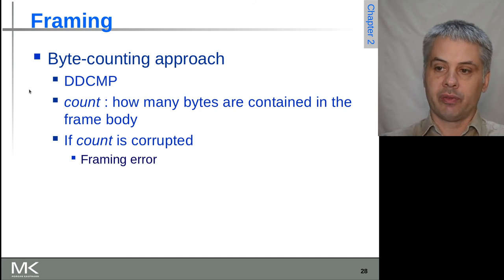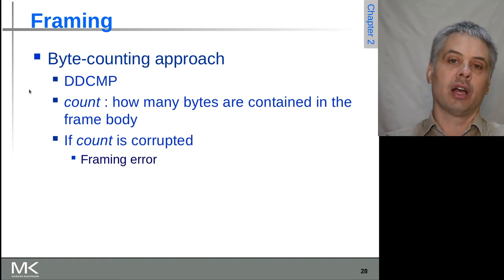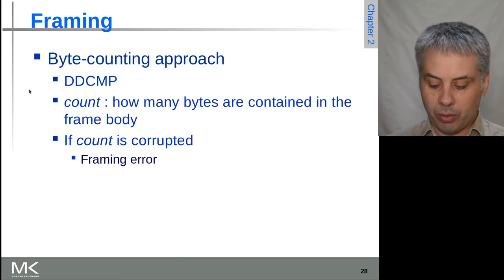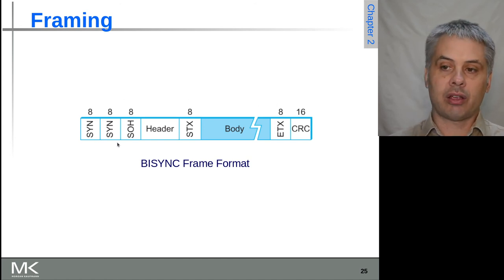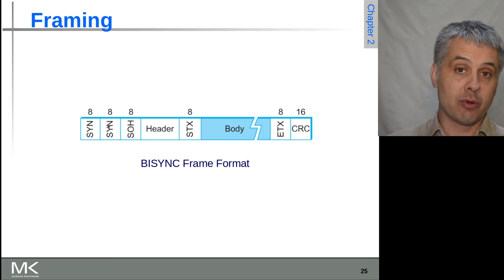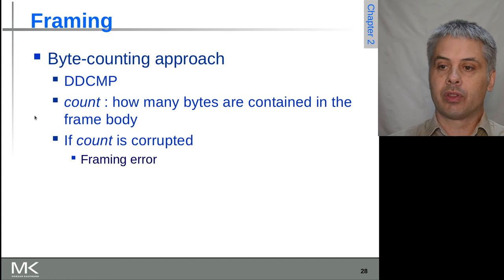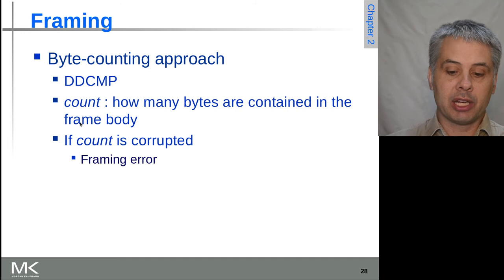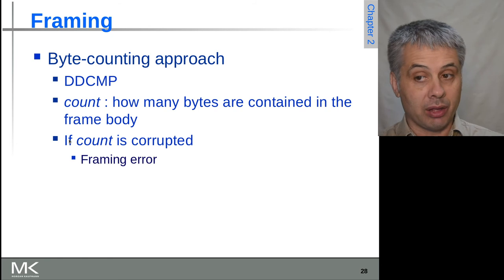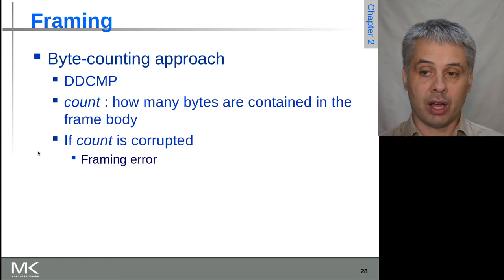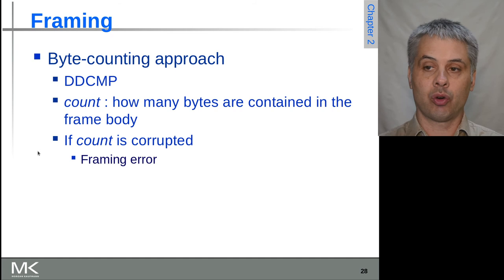An alternative approach was used by DDCMP. If you think about it, if we go back to those slides, there's five markers involved in the process, and that consumes some number of bytes and therefore some fraction of the available bandwidth of the link. We can save bandwidth by instead counting how many data bytes are actually in the frame and just send that count. The trouble is, if the count gets corrupted, then you have a framing error. You can't reliably reconstruct or receive the frame.